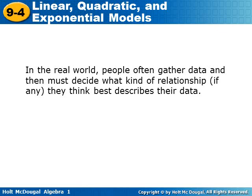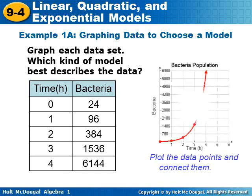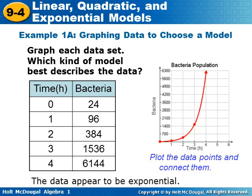In the real world, people often gather data and then must decide what kind of relationship, if any, they think best describes their data. Graph each set of data — what kind of model best describes the data? They give you time and bacteria. The bacteria is increasing over the amount of time. We plot the data and view the graph, and the data appears to be exponential.